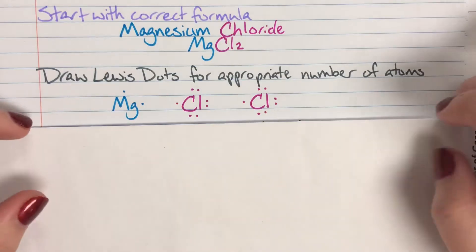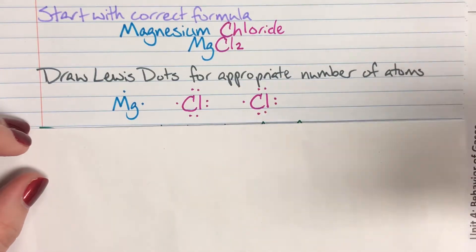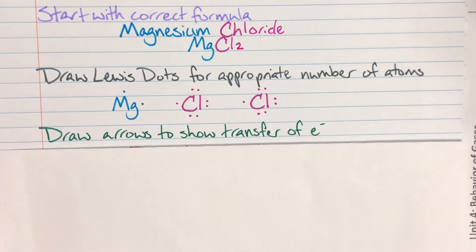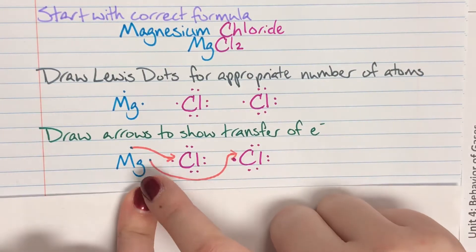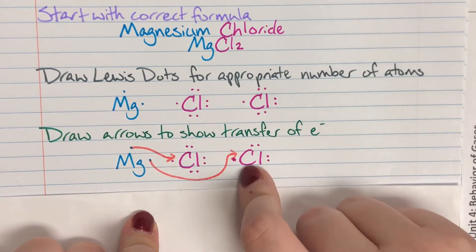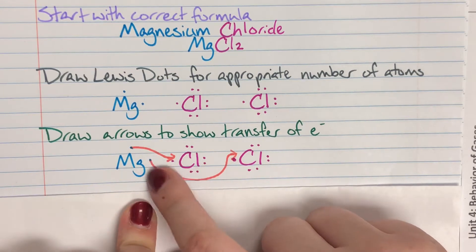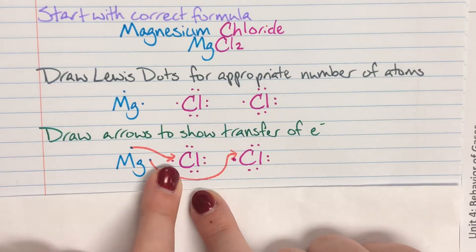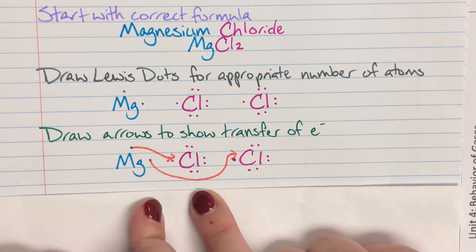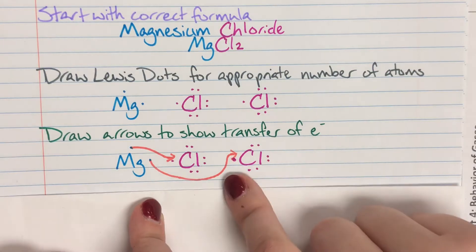Now that I have my Lewis dot structures for the appropriate number of atoms drawn, I can go ahead and draw arrows symbolizing that transfer of electrons from my metal to my non-metal, transforming them into something new. So I have magnesium giving up its two electrons. You'll notice that these arrows are drawn to the empty spaces on chlorine. Chlorine only has one empty space to fill, so one electron is going to go and sit with chlorine.